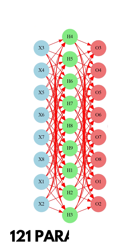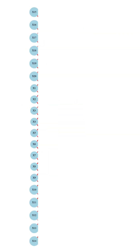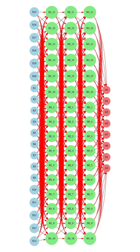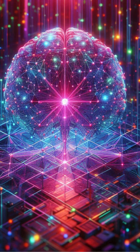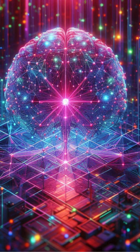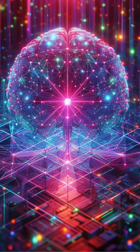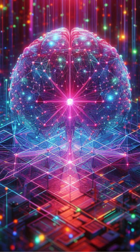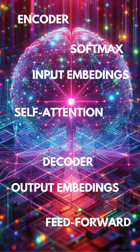This neural network has 121 parameters, and the one with five layers is already over a thousand parameters. A large language model is a neural network divided into several functional segments.